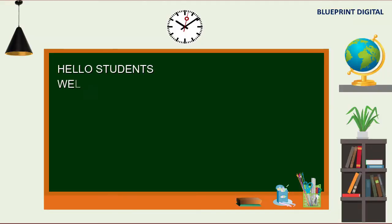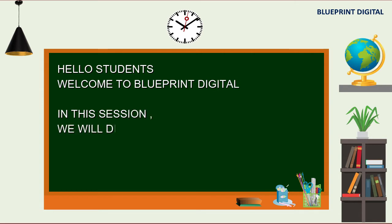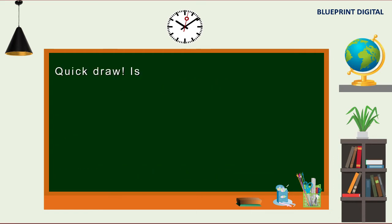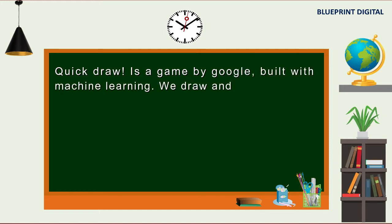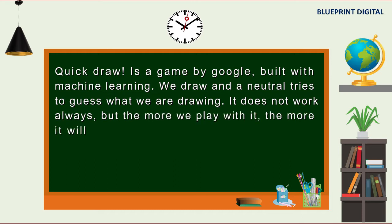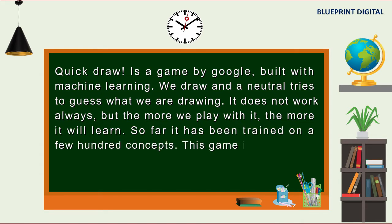Hello students, welcome to Blueprints Digital. In this session we will discuss Artificial Intelligence Class 10th lab game — Quick Draw. Quick Draw is a game by Google built with machine learning. We draw and a neural network tries to guess what we are drawing. It does not work always, but the more we play with it, the more it will learn. So far it has been trained on a few hundred concepts.